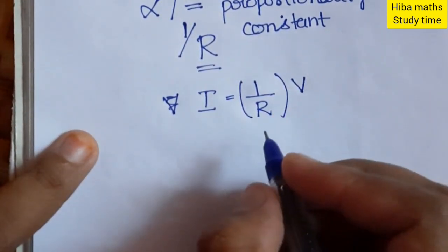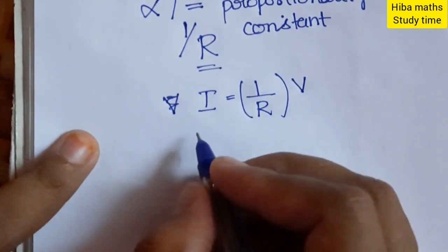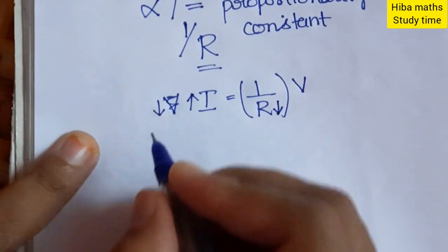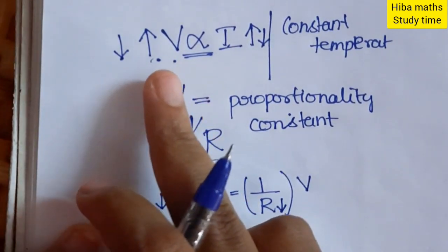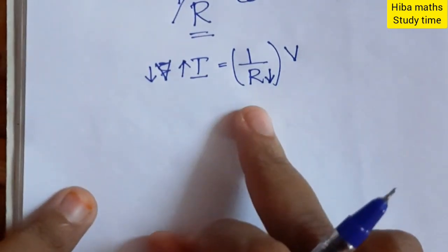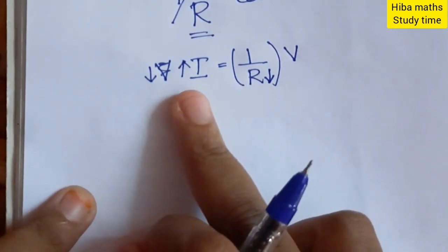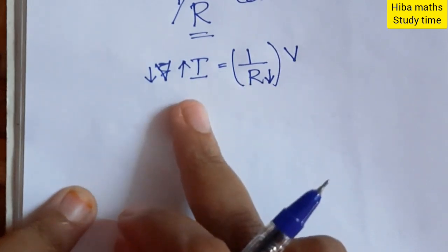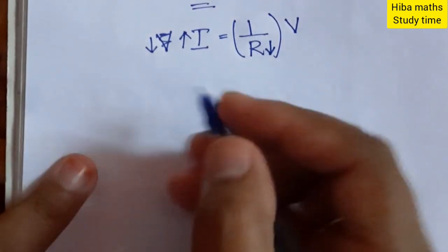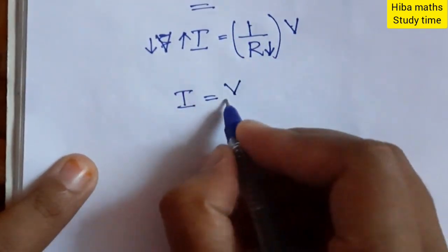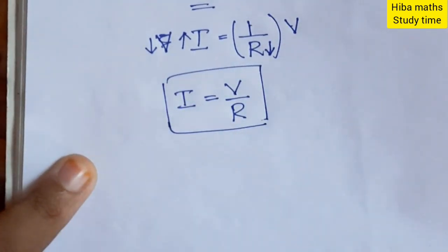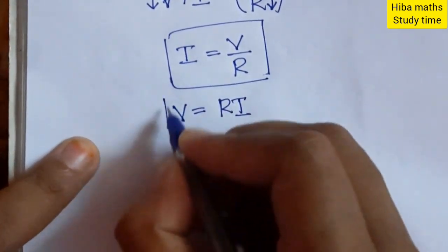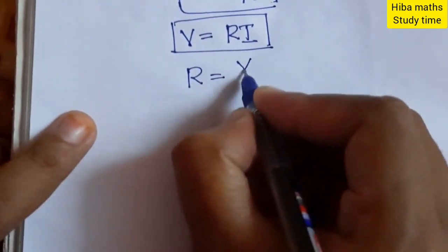Current is inversely proportional to resistance and directly proportional to voltage. From these relations, we can write three equations: V is equal to I into R, I is equal to V by R, and R is equal to V by I.